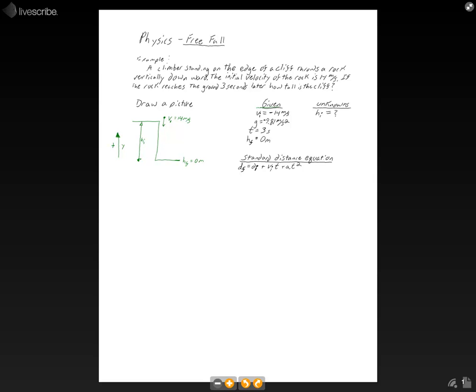So we have the initial velocity, v sub i, I have written down here as negative 14 meters per second. And that's just to account for the direction of the coordinate system. The coordinates are basically so that, again, the taller something is, the more positive it is. In this case, we're going straight down, so the velocity is going to be negative toward the Earth.